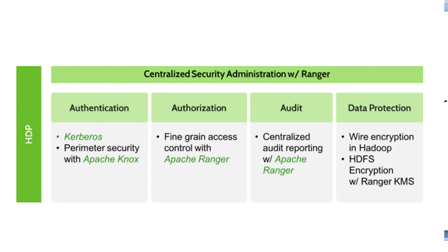Coming to perimeter security, there is a tool called Apache Knox, which provides perimeter security. All components — whether HDFS, Hive, or HBase — can be connected through Knox. We can open the Knox port, expose it externally, and close all other ports in the firewall, so users and services access all Hadoop components via Knox.